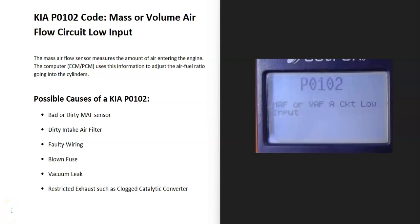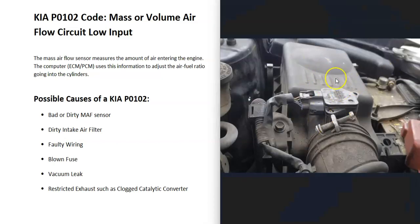Today I'm talking about a Kia with the P0102 code — what it is and how you go about fixing it. A Kia P0102 code is a mass or volume airflow circuit low input. There's a sensor called a mass airflow sensor located on the air intake, and it basically measures all the air going into the engine. The onboard computer uses this information to adjust the air-fuel ratio mixtures that go into the cylinders.